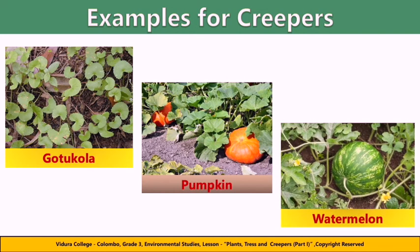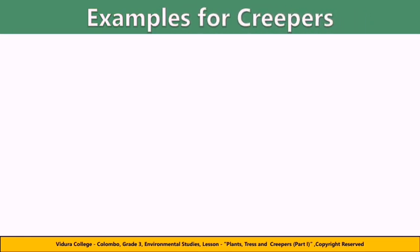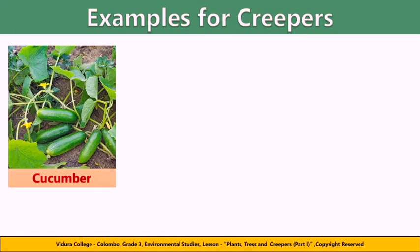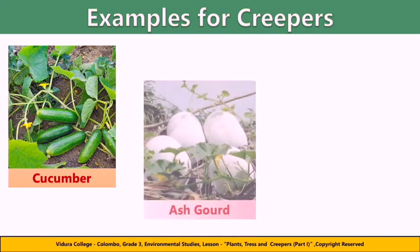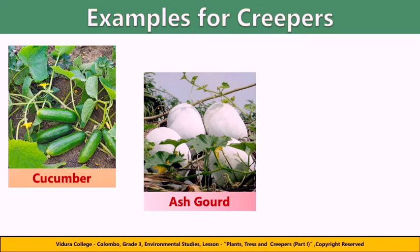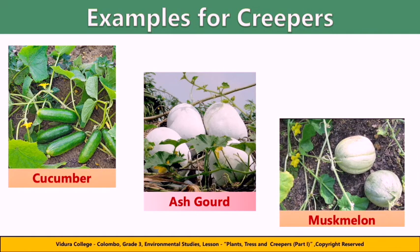Watermelon plant is another creeping plant which produces watermelon, a fruit with sweet, juicy, refreshing flesh of yellowish or reddish color. Let's learn some more examples for creepers. Cucumber is a creeping plant which produces cucumber, covered in a hard thick outer rind. The Ashgourd plant produces a large fruit eaten as a vegetable when mature. Muskmelon is also another creeping plant.